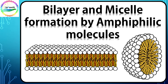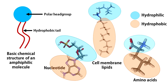Most biological molecules are amphiphilic, meaning they have both polar and hydrophobic segments. You can think about a nucleotide — it has a hydrophobic base and a polar sugar-phosphate backbone. You can also think about lipid molecules that construct our cell membranes — they have a polar head group and hydrophobic tails.